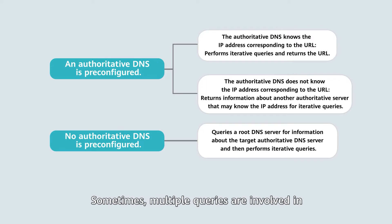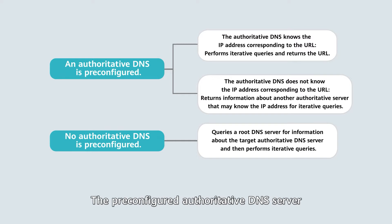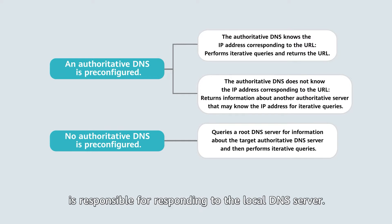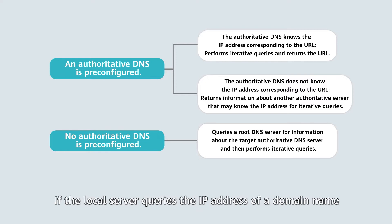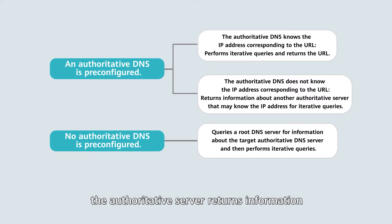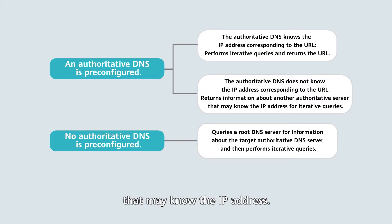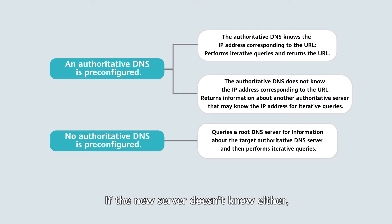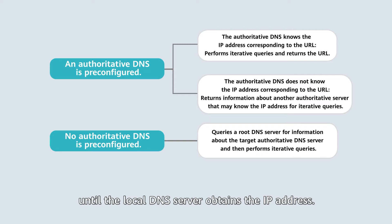Sometimes, multiple queries are involved in obtaining the desired IP address. The pre-configured authoritative DNS server is responsible for responding to the local DNS server. If the local server queries the IP address of a domain name but the authoritative server does not know the IP address, the authoritative server retains information about another authoritative server that may know the IP address. The local DNS server then queries this new server, and if that server doesn't know either, this process repeats until the local DNS server obtains the IP address.